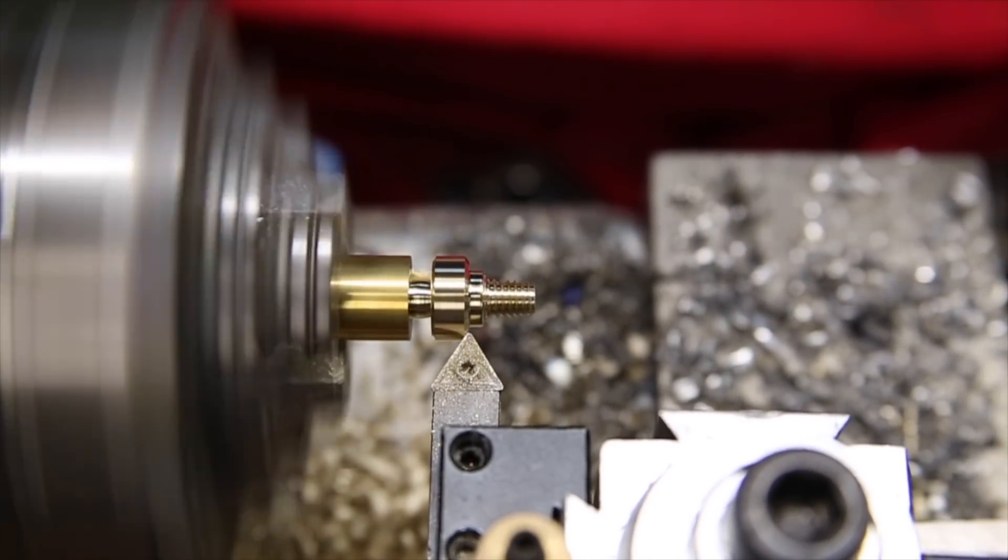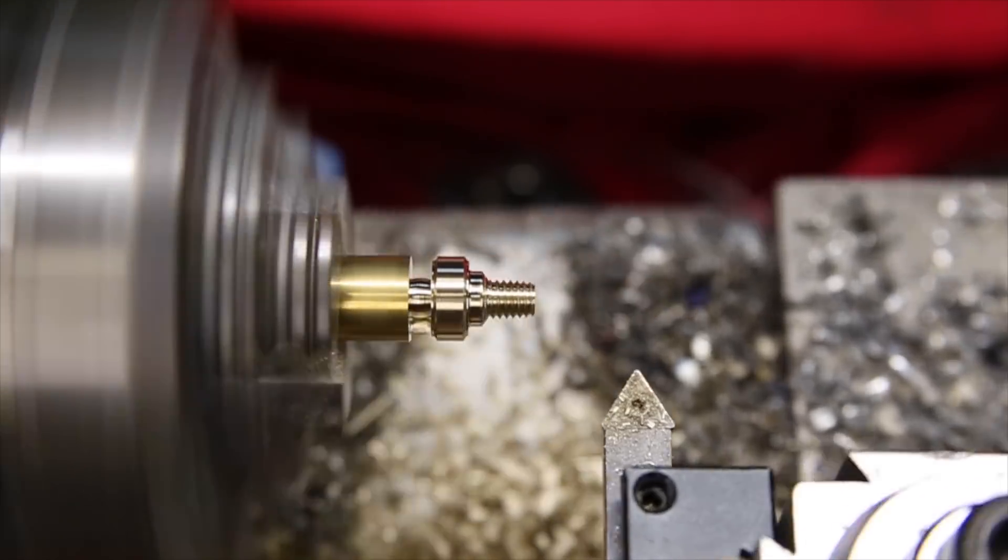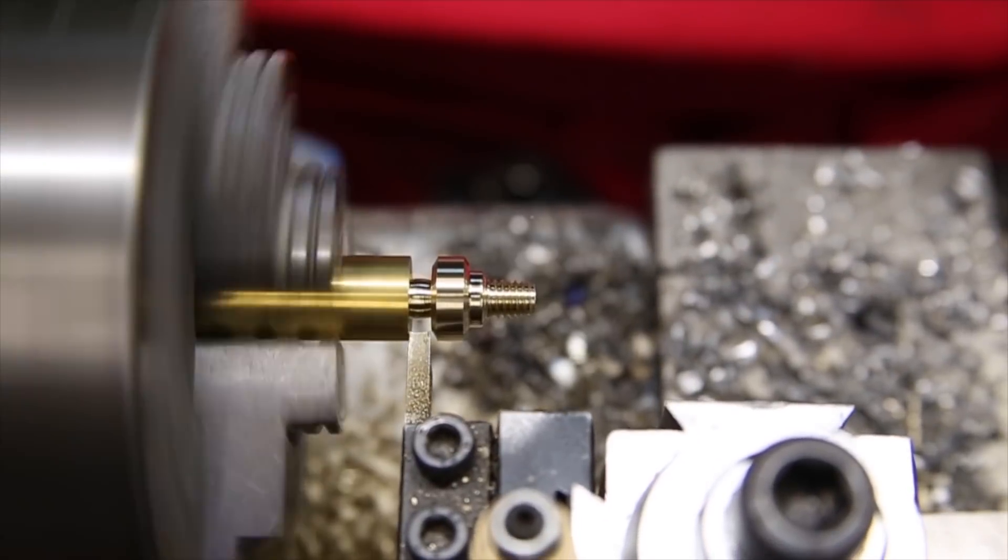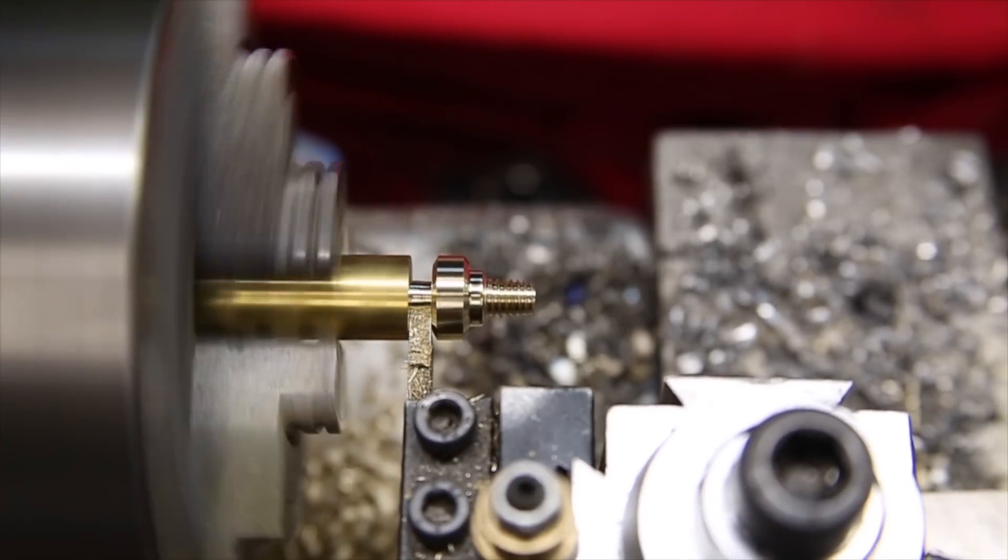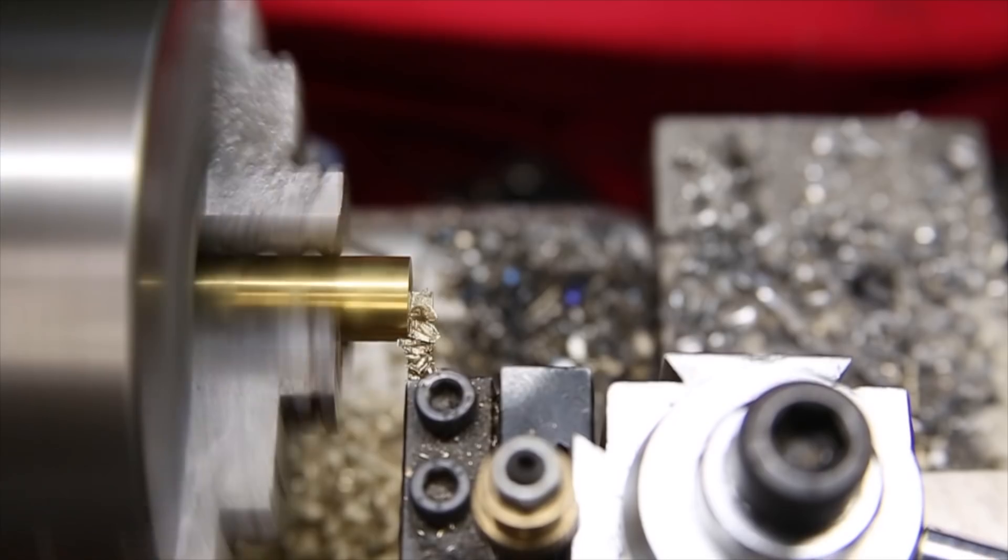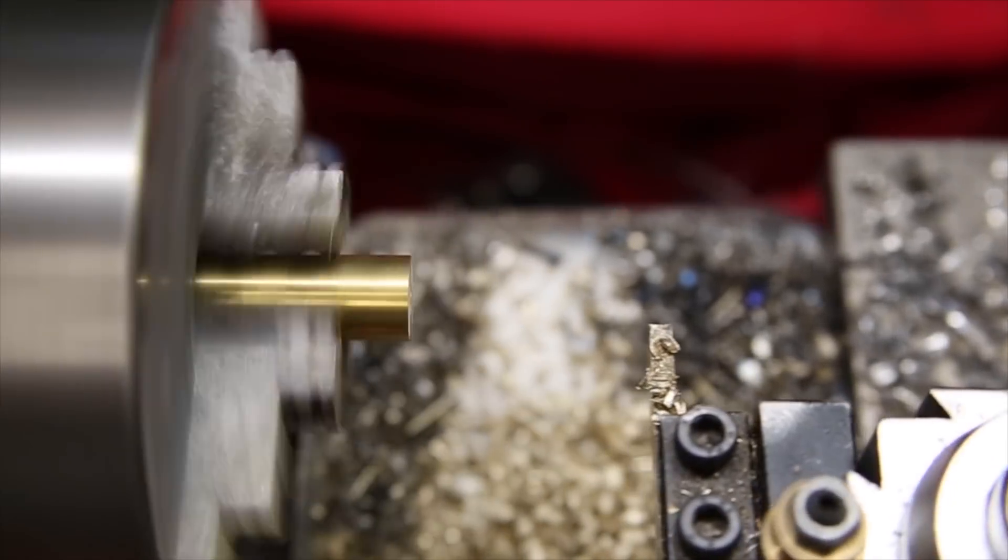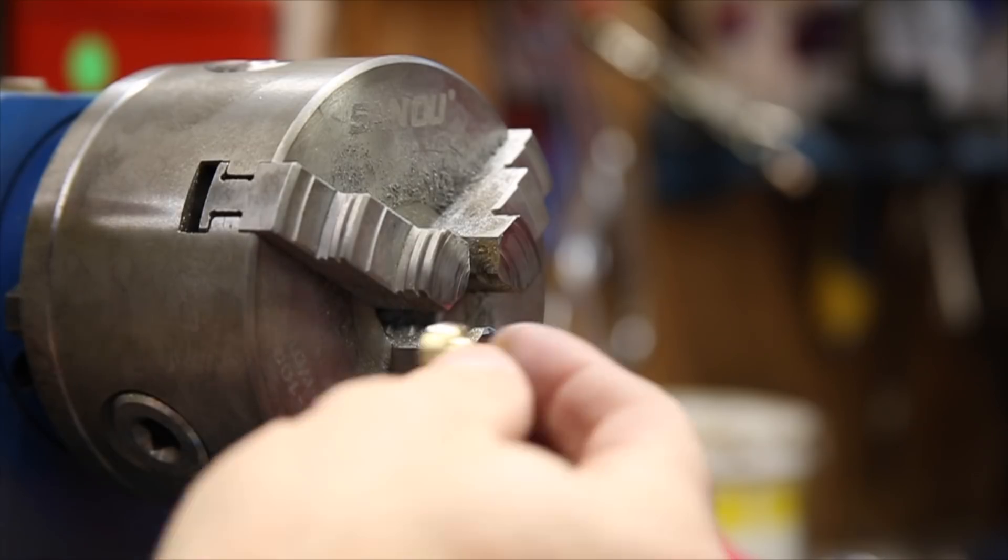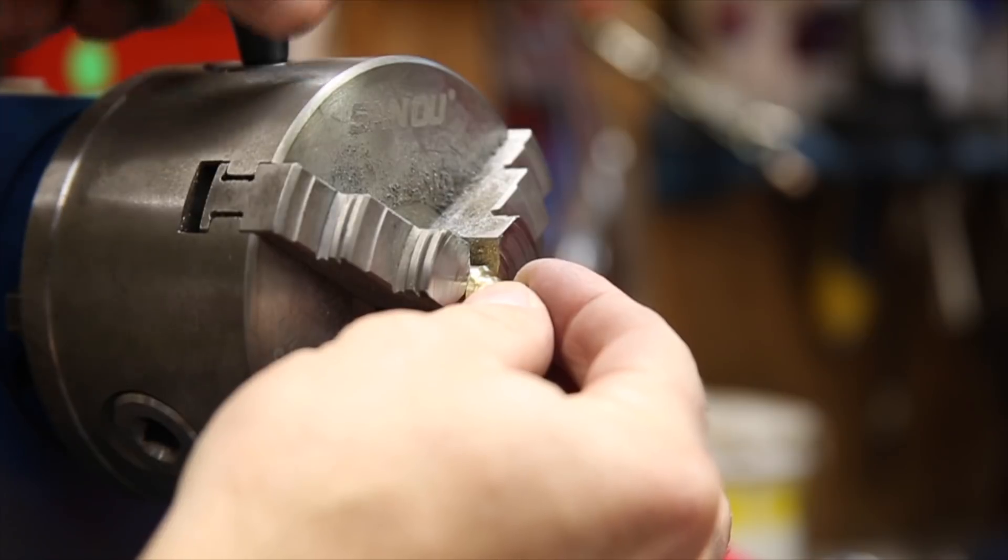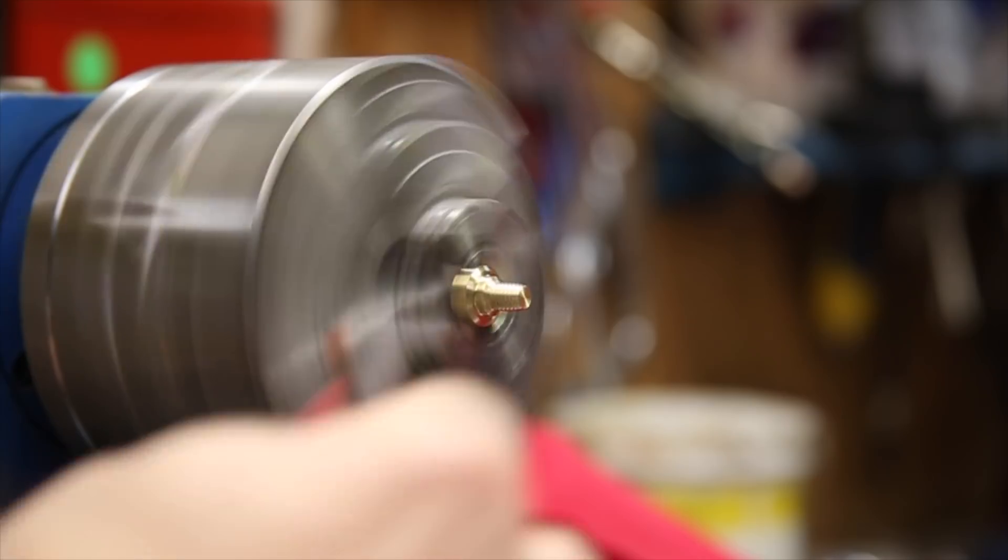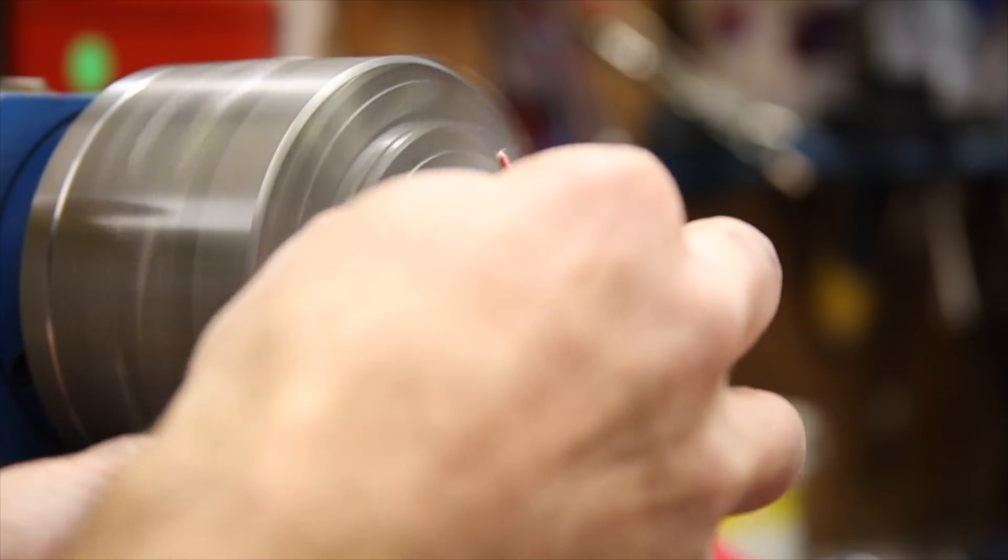With the threads finished, I added some beveling to the top and bottom of the grip part of the thumb screw in preparation to part it off. I also wanted to quickly smooth out any rough edges from the threading.